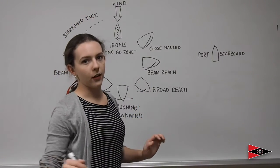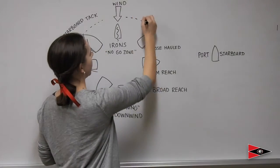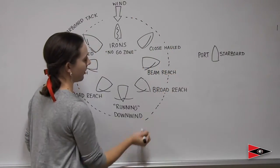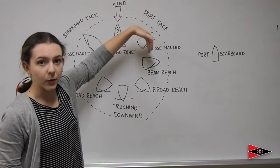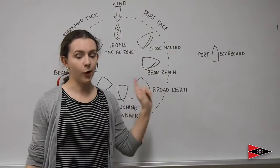And process of elimination, all of the boats on this side of the circle are on a port tack, because the wind is blowing across the port side of their boat and hitting the sails on the starboard side.